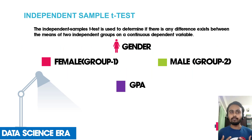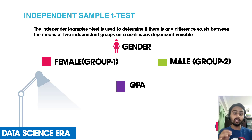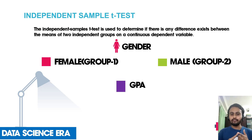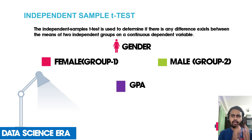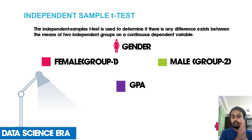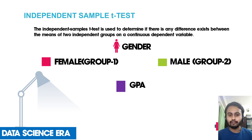First, let's cover the basic idea of what is an independent sample t-test. The independent sample t-test is used to determine if there is any difference between the means of two independent groups on a dependent variable. For example, let's say we have an independent variable — gender — which has two groups: male and female. That makes it a categorical variable. And let's say we have grade point average as the dependent variable. We want to know whether the mean GPA for males differs from the mean GPA for females.